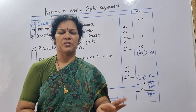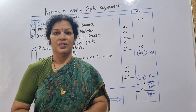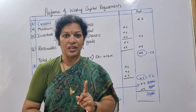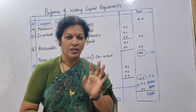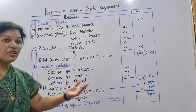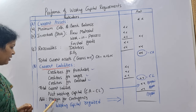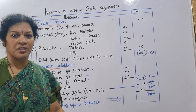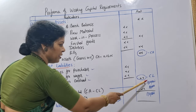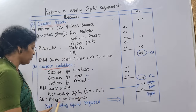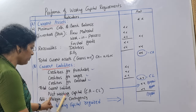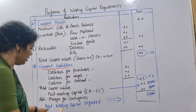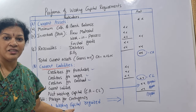A surplus or margin — for example 10% or 15% — is added to the total working capital. This margin for contingency accounts for unexpected future events. For example, if the margin is 10%, then 10% of one lakh is 10,000. So add 10,000 as margin for contingency: one lakh plus 10,000 equals one lakh ten thousand, which is the net working capital required.